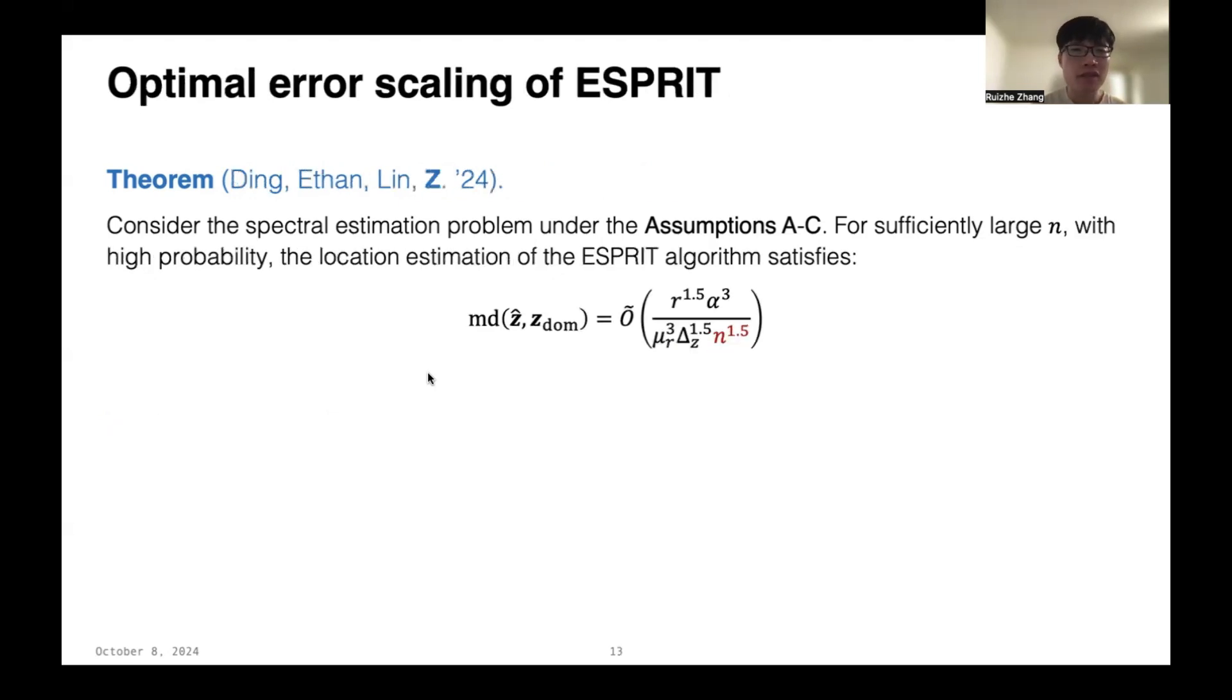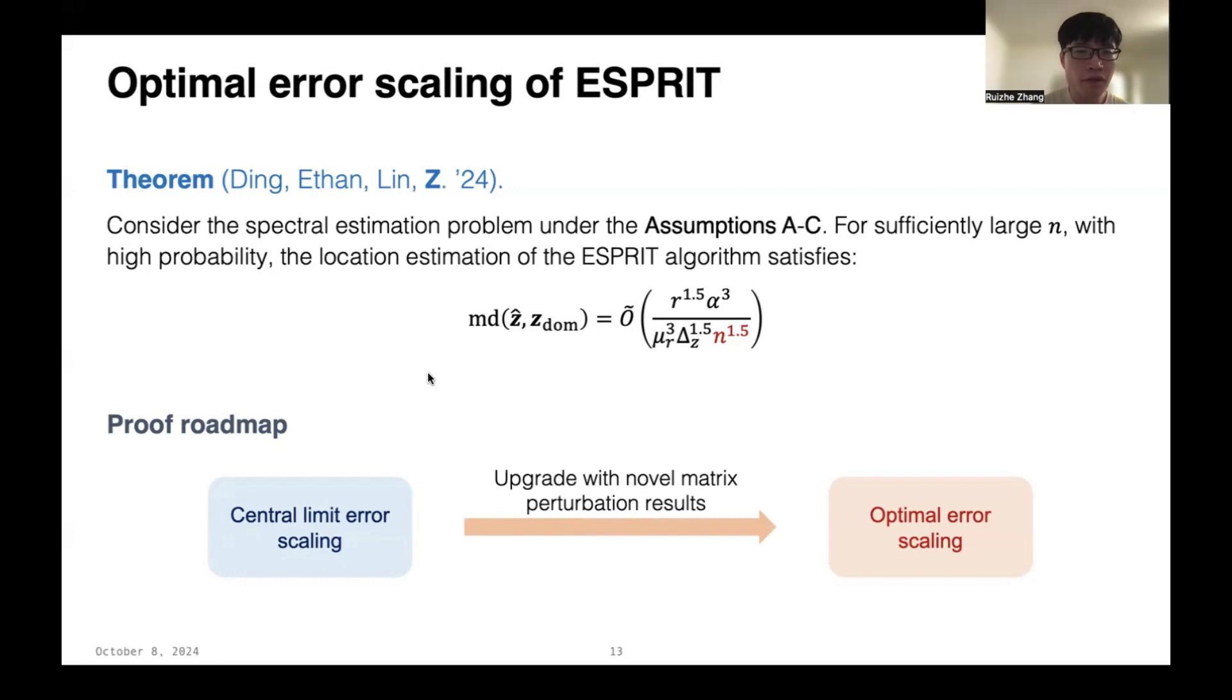So, our main result is the tighter bound for the location estimation error in terms of n. So, basically, if we consider all the parameters are constant, like r, α, μ_r, and Δz to be constants, then the location estimation error will scale like 1 over n to the 1.5. And this is the optimal error scaling for the noisy super-resolution regime. How do we prove this? In the following part of the talk, I will first sketch the key ideas to prove the simple limit error scaling as a toy example, and then talk about how to upgrade the proof with some novel matrix perturbation results to obtain the optimal error scaling of the ESPRIT algorithm.